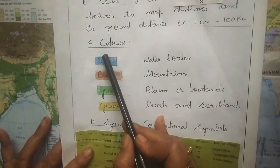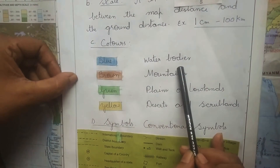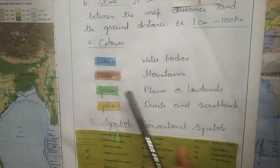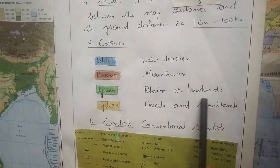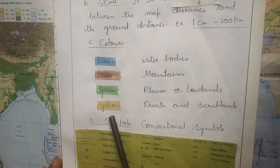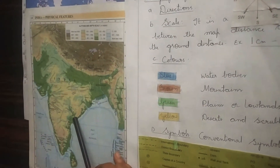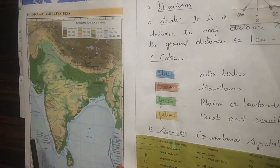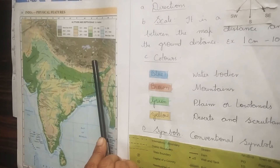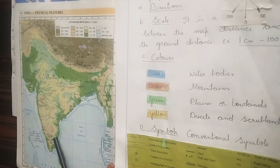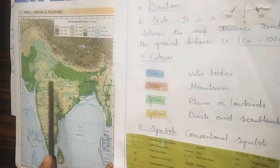The third language of the map is colors. When blue color is shown, that is water bodies. When brown color is shown, that is mountains. When green color is shown, that is plain or lowlands. When yellow color is shown, that is desert and scrub lands. Here is a color scheme showing blue for water bodies, brown for mountains, green or yellow for plain lands, and yellow for deserts and scrub lands.